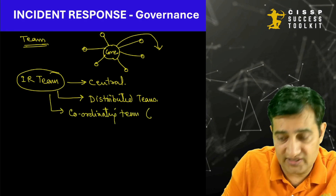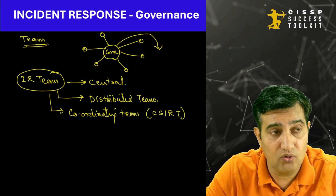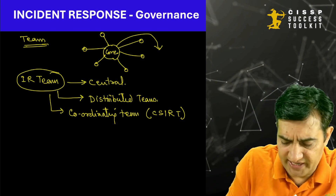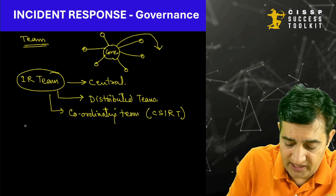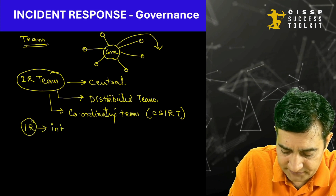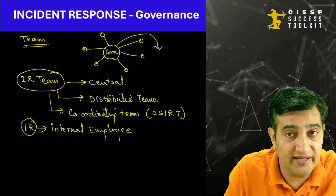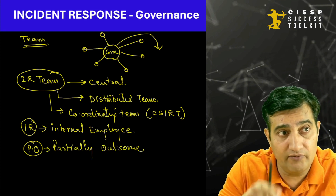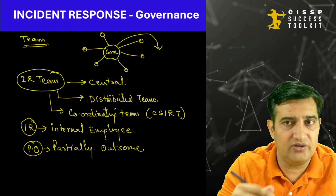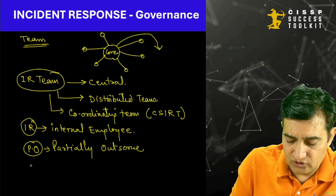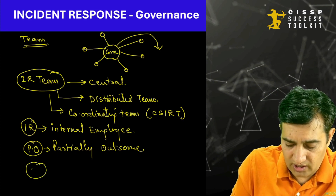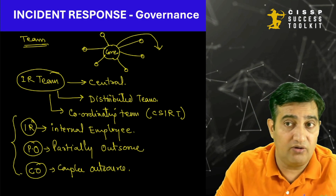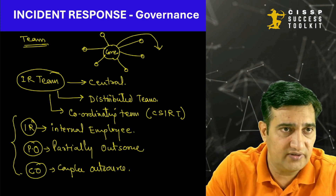In certain cases you might have distributed teams — different teams for different locations coordinating between them. When we say coordination, we also have a coordinating team. You may have heard something called CSIRT — this is an advisory or overall governance team that drives all the region-specific teams. In some cases based on your company situation, the entire incident response is handled by internal employees. In some cases it is partially outsourced — for example, outsourcing level one while level two and three are managed internally. If you do not have the expertise at all, you can go for complete outsourcing.